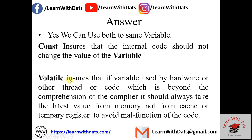There might be a chance that the declared variable is being used by some hardware-related things or by some multi-threaded applications. We never know when its value will change outside the scope of the code. Volatile ensures that if the variable is used by hardware, another thread, or code beyond the compiler's comprehension, it should always take the latest value from memory, not from cache or a temporary register, to avoid malfunction.